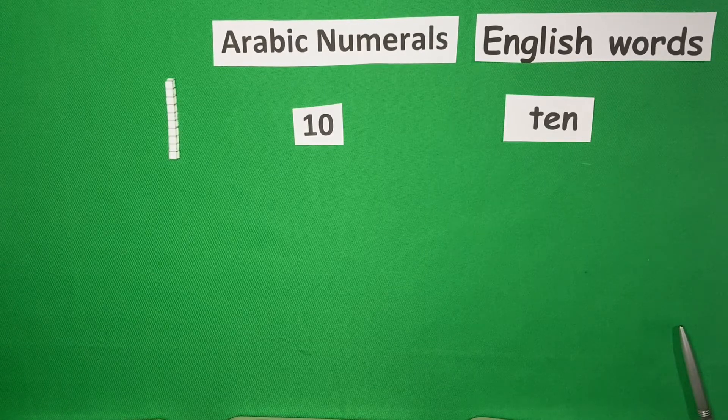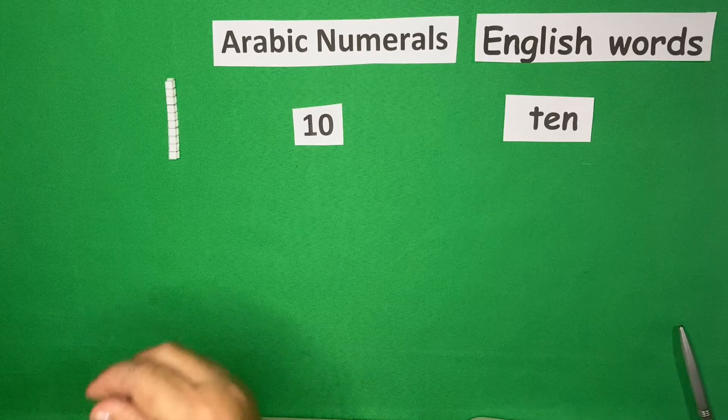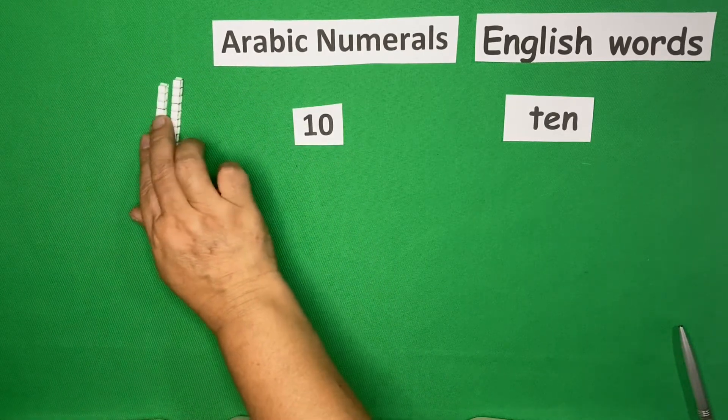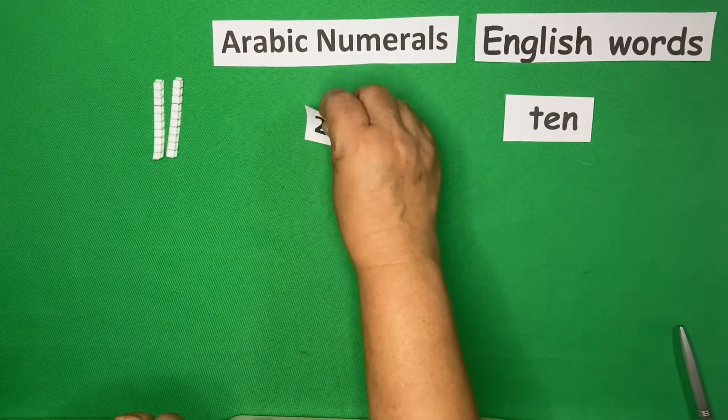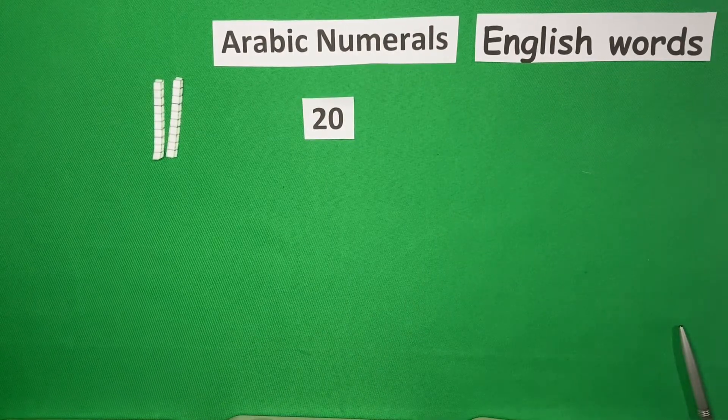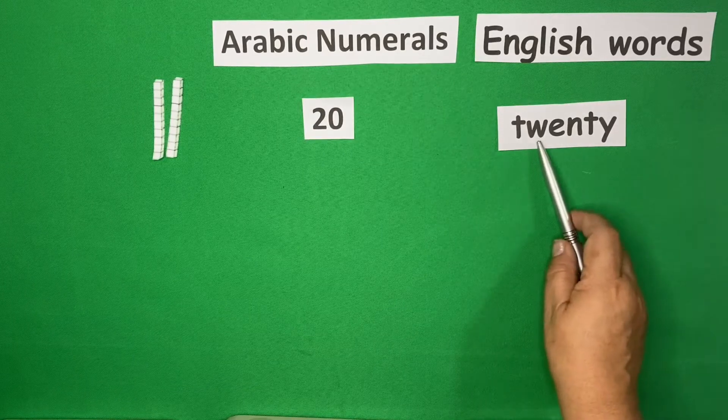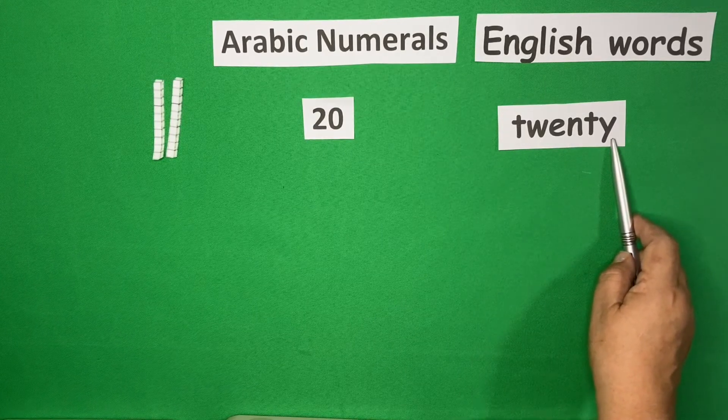Now, if there are 2 of this, this is not 10, but 20. And this is 20. To spell 20, we have T-W-E-N-T-Y.